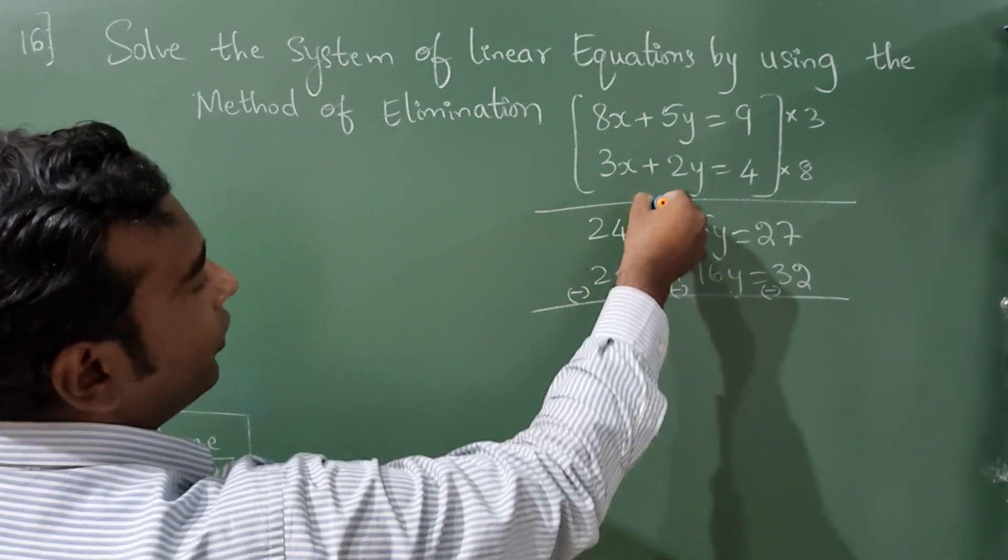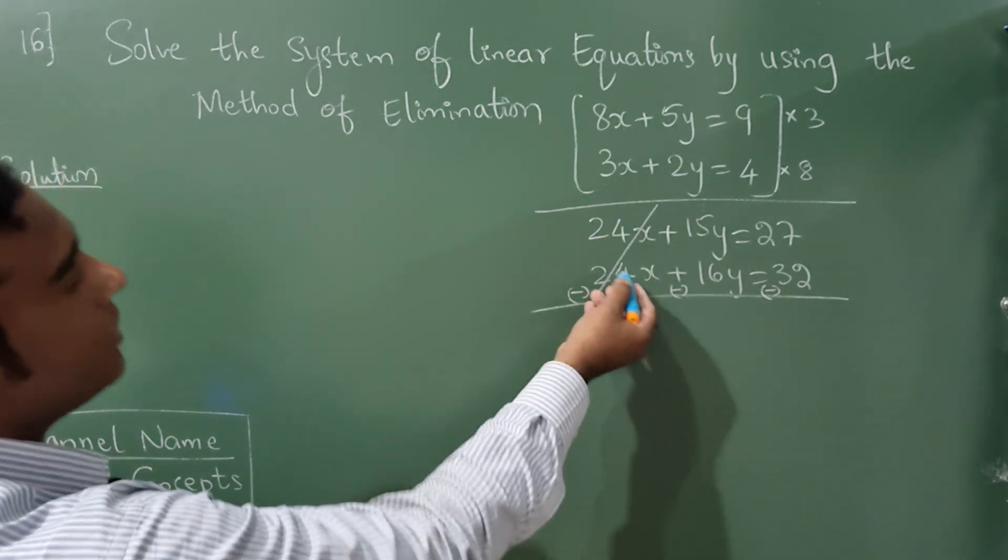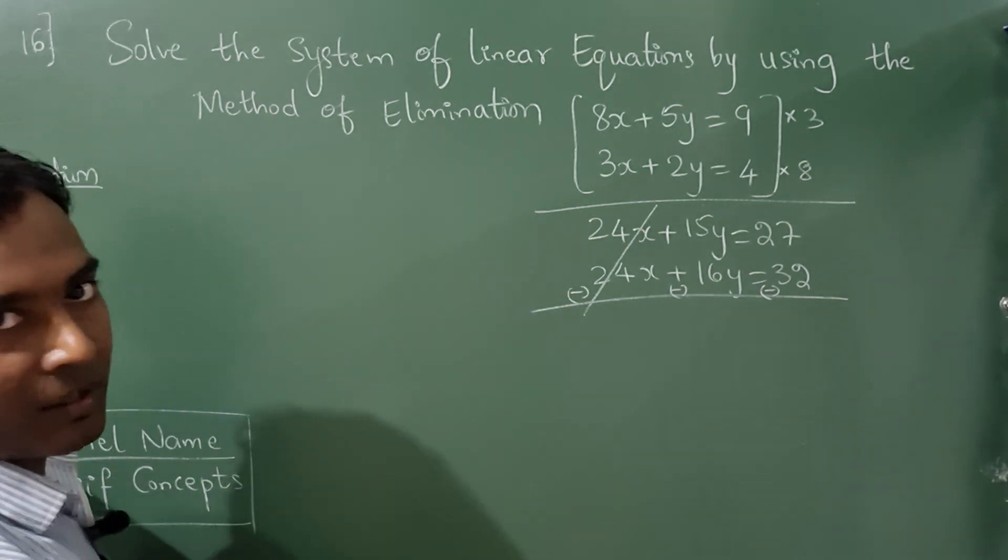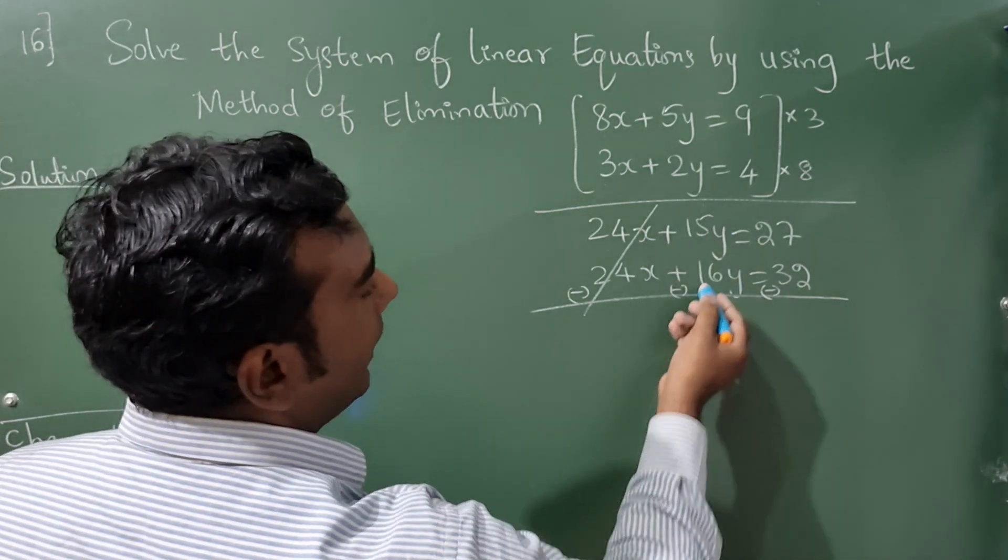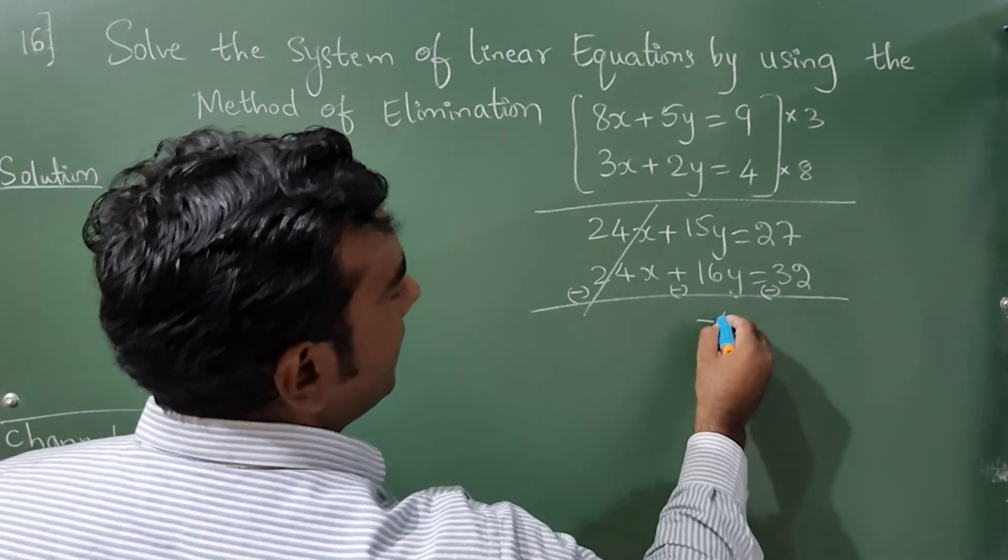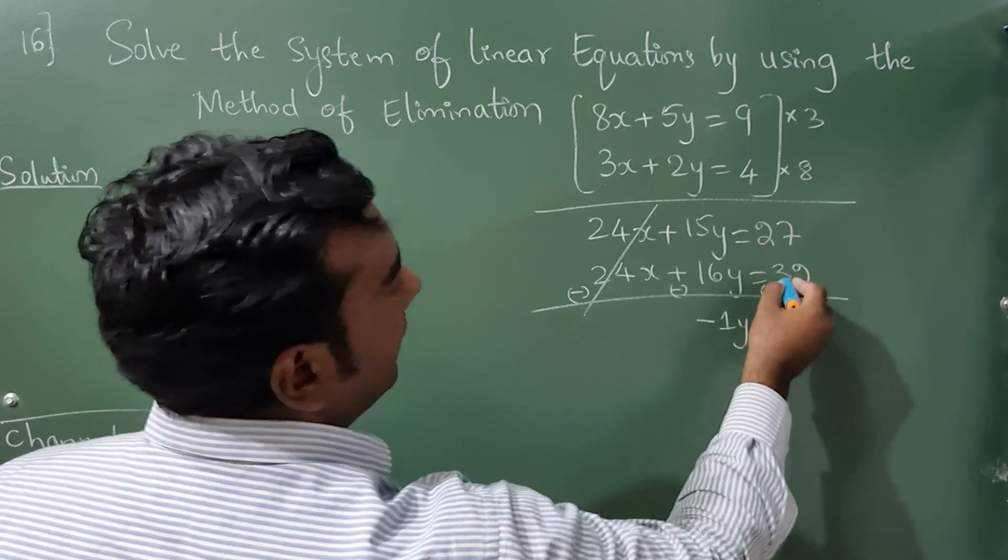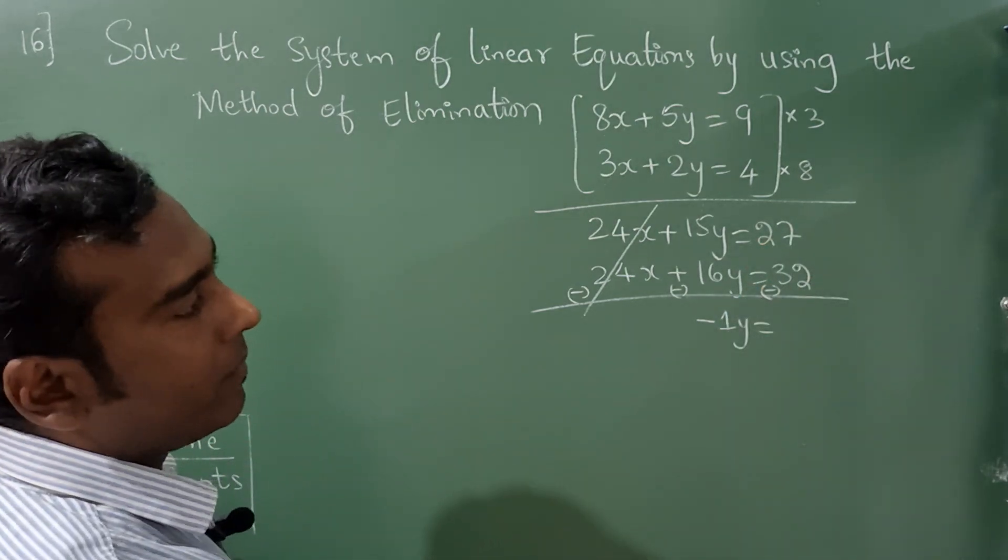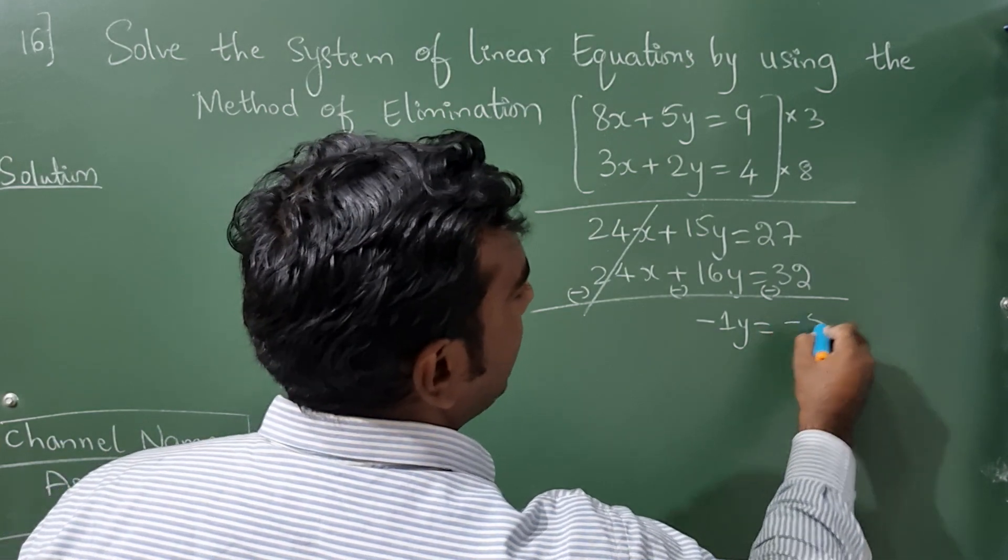24x minus 24x gets cancelled - this is the method of elimination. Now find the value of y: 15y - 16y = -1y, and 27 - 32 = -5. So -1y = -5, and the negatives cancel, giving y = 5.